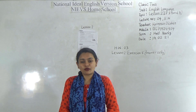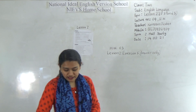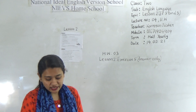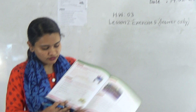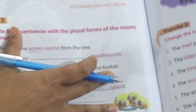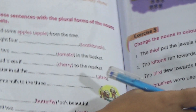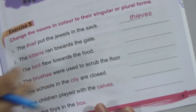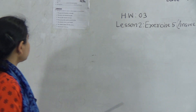Our topic is singular and plural, so let's start our class. It is good to take your Enjoying Grammar book in front of you. All of you go to page number eight and you will find Exercise number 3. We will do Exercise number 3 and also Exercise number 5 on page number nine. All of you can take your book.